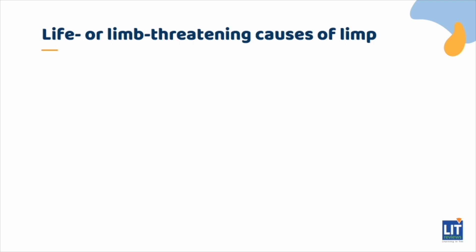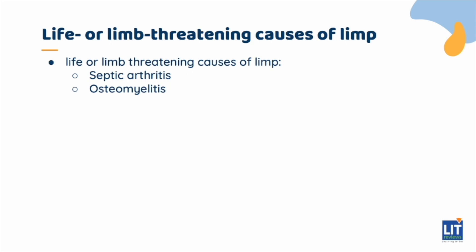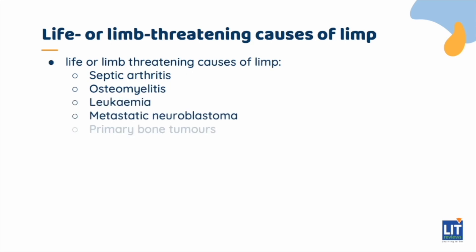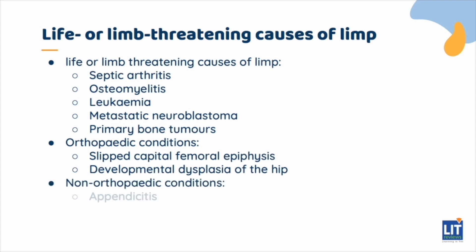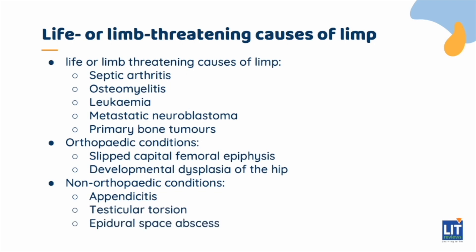When trying to diagnose limp in a child, it's important to first consider the life- or limb-threatening causes of limp. These include severe infections like septic arthritis or osteomyelitis, cancers including leukemia, metastatic neuroblastoma, and primary bone tumors. For orthopedic conditions, think of fractures and developmental disorders such as slipped capital femoral epiphysis (SCFE), developmental dysplasia of the hip. We should also consider non-orthopedic conditions such as appendicitis, testicular torsion, or an epidural space abscess.